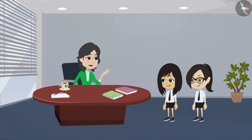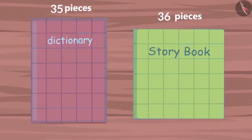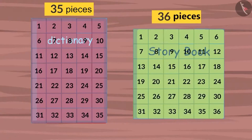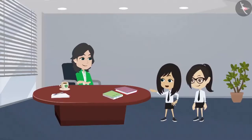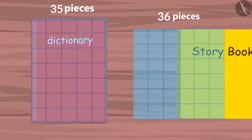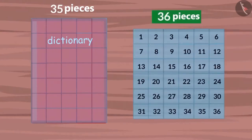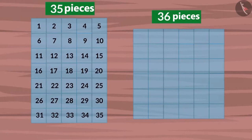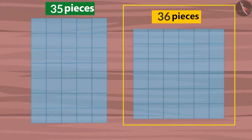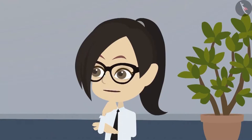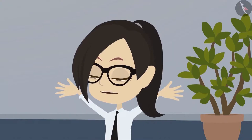Now tell me, whose book required more pieces to cover? Madam, 35 pieces were used to cover my book, whereas 36 pieces were required to cover Neha's book. That means more pieces were required to cover Neha's book. So does this mean that Neha's book is bigger than mine? Yes, because Neha's book occupies space equal to 36 pieces, and your book occupies space equal to 35 pieces. This means that Neha's book occupies more space. That means Neha's book is bigger. Now I understand why we can say that Neha's book is bigger than my book.